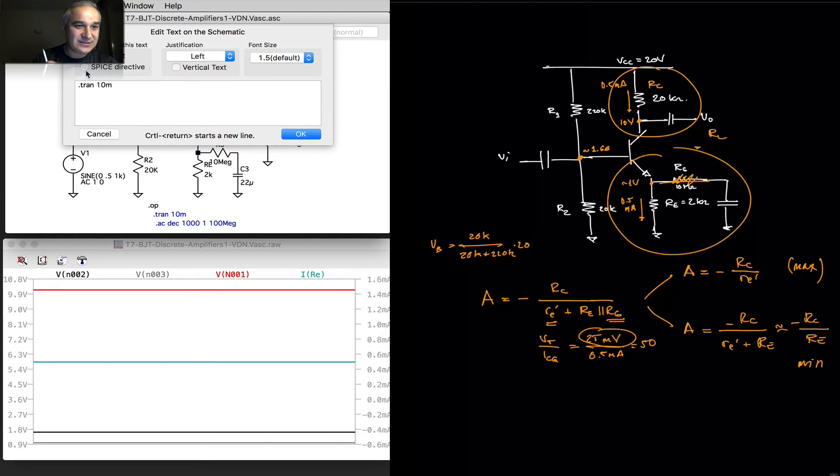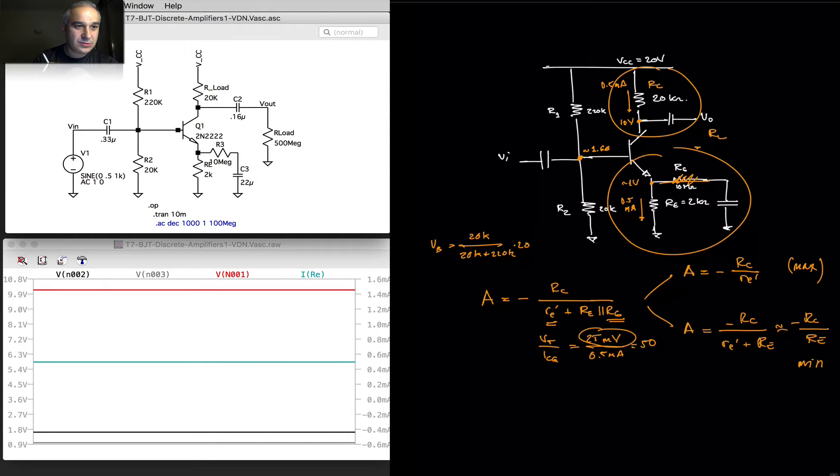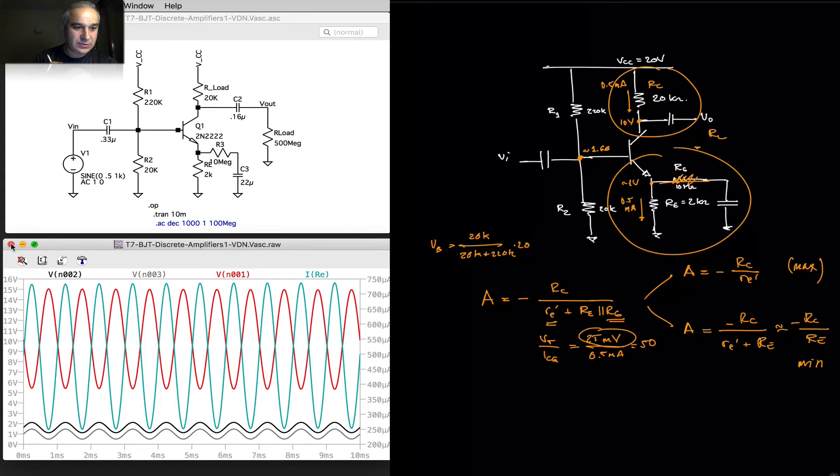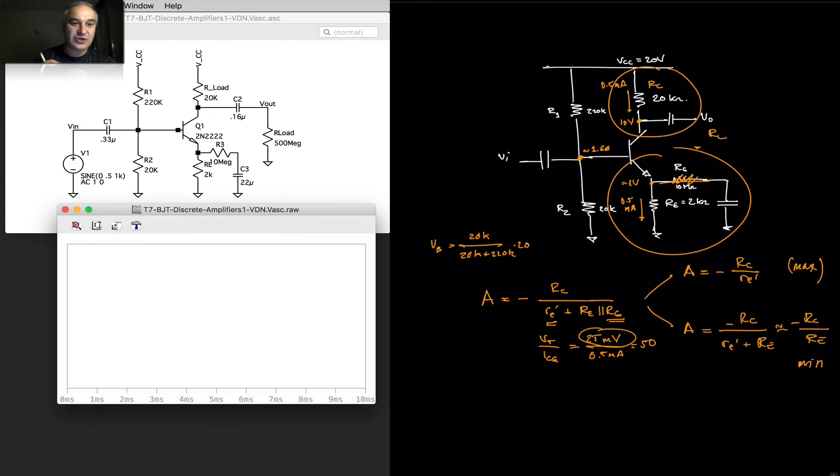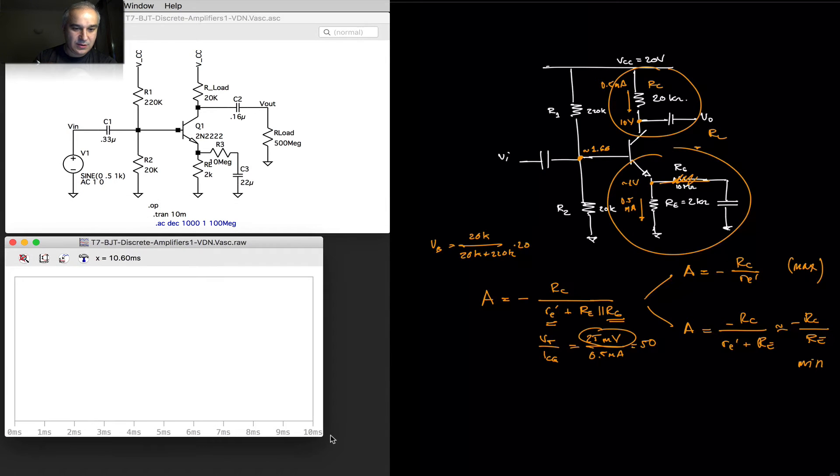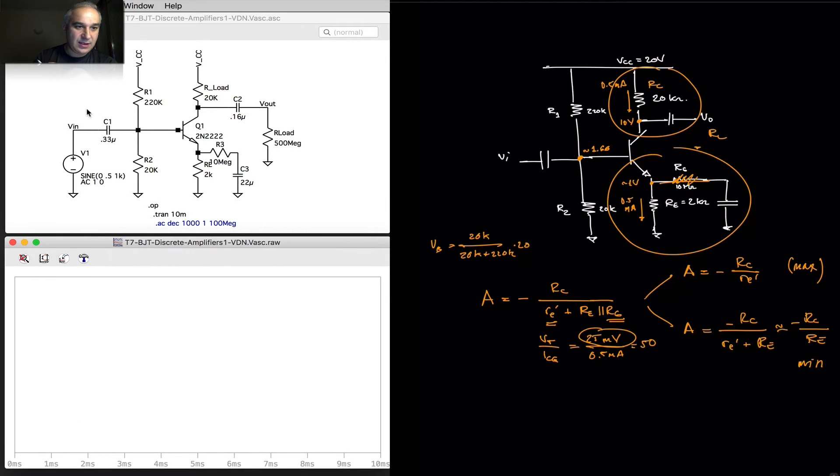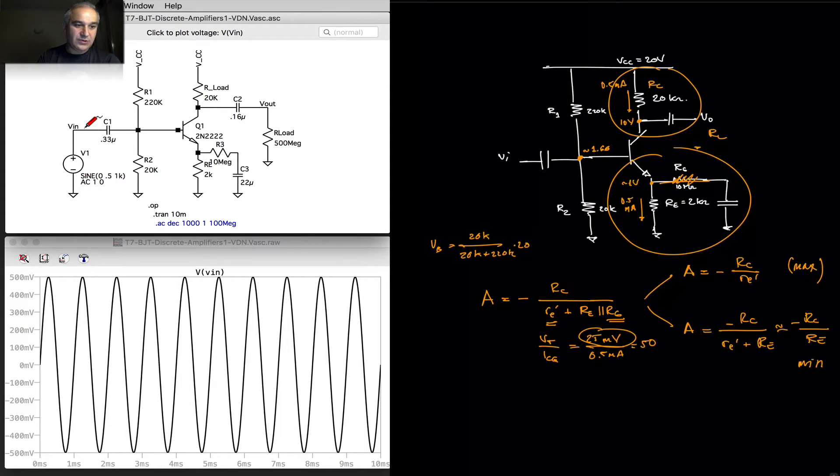So, let's do a transient analysis. Let's go, actually, step-by-step. What do we expect at Vin? We expect 1kHz 0.5 volts, centered at 0, so 500 millivolts signal. Once we go, this is coupled, at the base, we expect the same signal, but what was the voltage at the base? Around 1.6 volts, so that's what we expect.